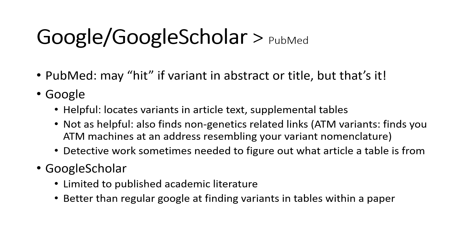There is a bit of a learning curve with using Google search results, but with time and experience you'll start to recognize which search hits are worth looking into further. For example, searching ATM variants will find scientific publications as well as local ATM machine locations, and sometimes you'll find a link that looks really helpful, such as a supplemental table to an article, but the source article isn't clearly specified — we'll walk through an example of that later. Google Scholar is more specific than Google because it is limited to published academic literature and tends to be more effective at finding variants listed in a table within the actual paper, but it may not find publications where your variant is only in a supplemental table.